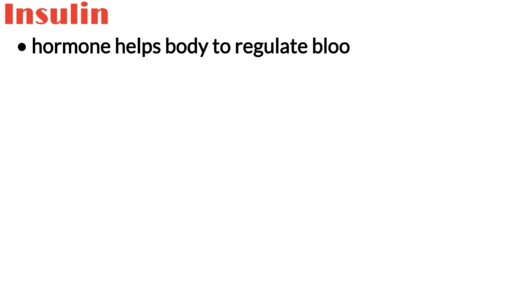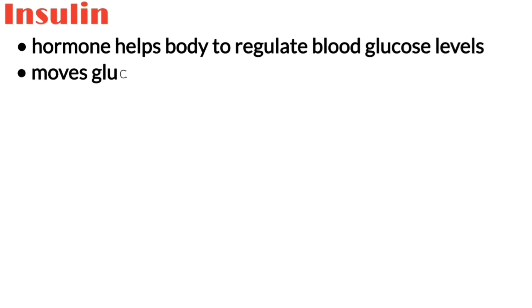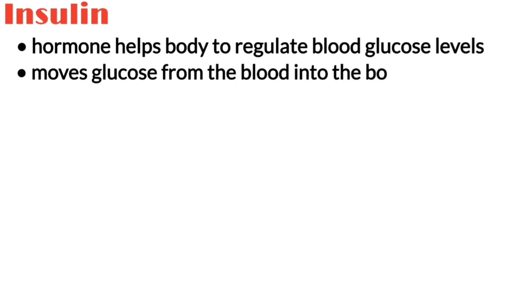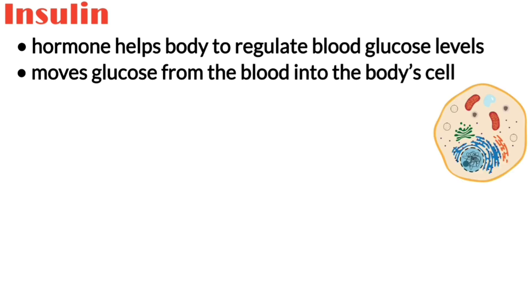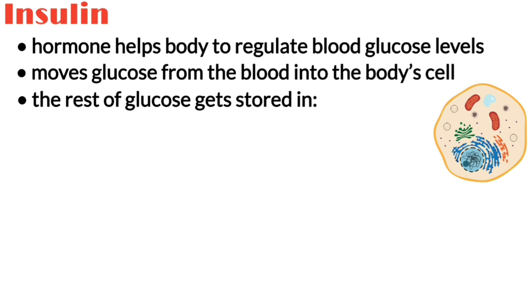Insulin is a hormone that helps the human body to regulate blood glucose levels. It moves glucose from the blood into the body's cells where it is used as fuel. After the body uses what it needs, the rest gets stored in the liver, muscles, and fat cells.